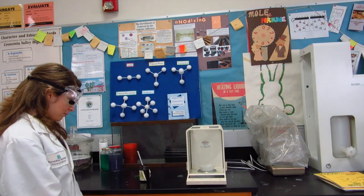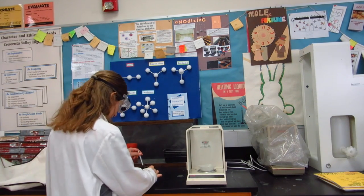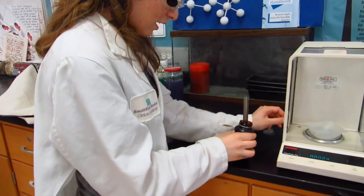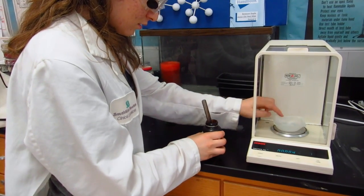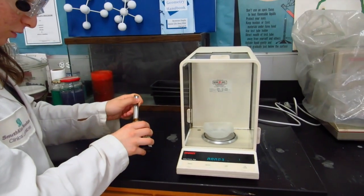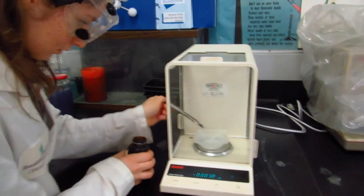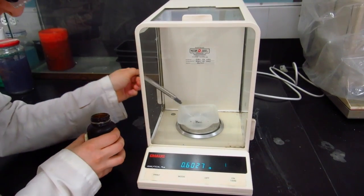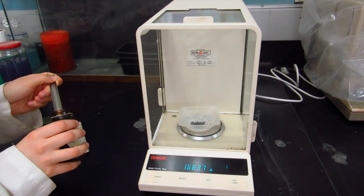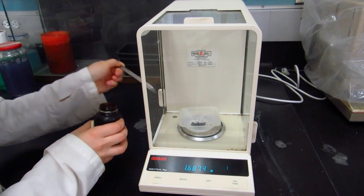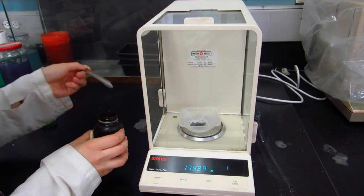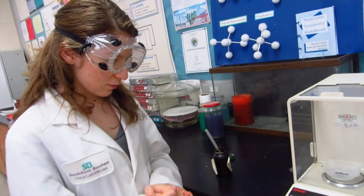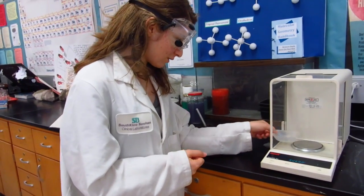So first you start out by pouring two to three grams of iodine, which is very poisonous, so we have to be careful. And you pour this onto a weigh boat inside an analytical balance, which has been tared. Okay. So we get 2.46 grams of iodine, so that's fine.